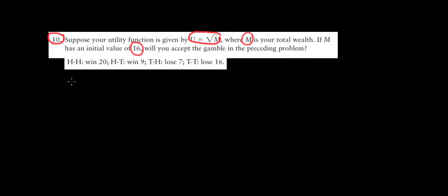This is the gamble that we had in question 9. We have a 1/4 probability of winning 20, a 1/4 probability of winning 9, a 1/4 probability of losing 7, and a 1/4 probability of losing 16.